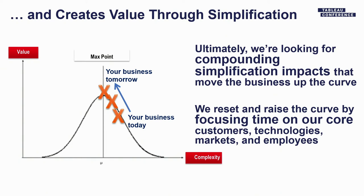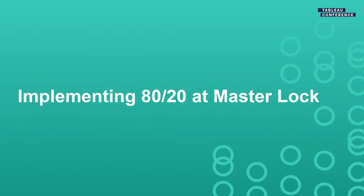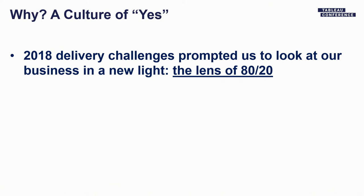I want to walk through this chart: what happens when you've got a hundred-year-old company? In the first 80 or 90 years you might be climbing the value axis as you add complexity — more complex, more value to the marketplace. But at some point you can get so complex, with so many SKUs, customers, employees, and initiatives, that you actually start reducing value. 80-20 is a tool to help get you back up to that optimal point of value and complexity by focusing on the right things.